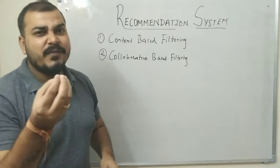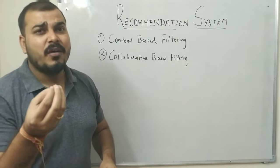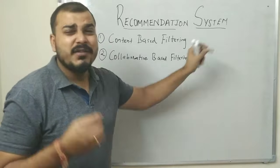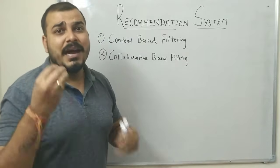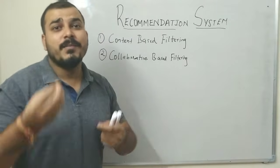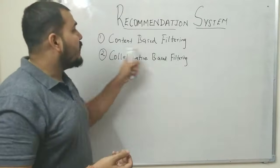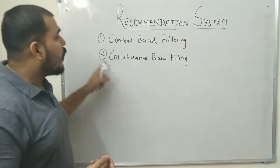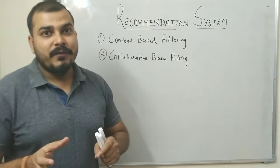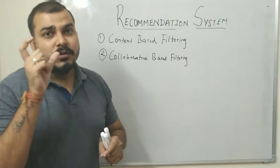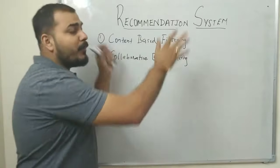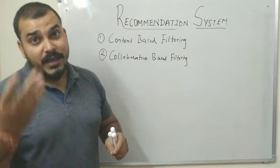We'll understand these techniques by taking a small example of a movie dataset. I'll show how, when users select specific movies and give ratings, content-based filtering and collaborative-based filtering each work. At the end of this video, I'll also provide a link to a video where I've actually implemented a recommendation system.